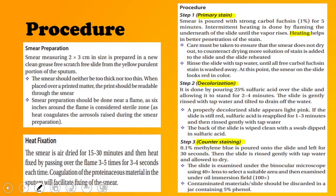The agents used in acid-fast staining: primary stain is carbol fuchsin (compared to crystal violet or gentian violet in gram stain), the decolorizer is 25% sulfuric acid, and the counter stain is 0.1% methylene blue.